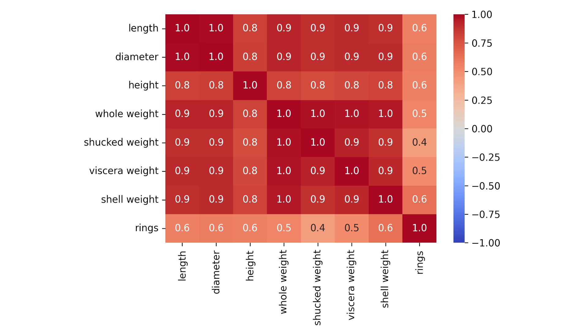Again and again we are faced with the enemy of explainable AI, multi-collinearity. Highly correlated features can wreak havoc on your model interpretations.